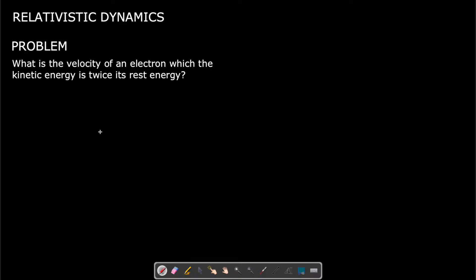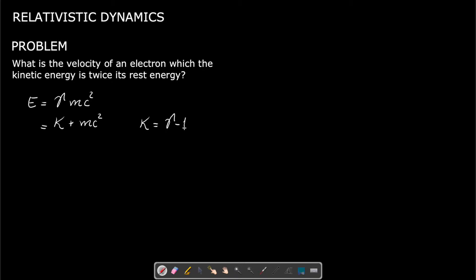The problem is: what is the velocity of an electron whose kinetic energy is twice its rest energy? We know that the total energy is equal to gamma times m c squared, and the total energy is also equal to the kinetic energy plus m c squared. In other words, the kinetic energy is (gamma minus 1) times m c squared.